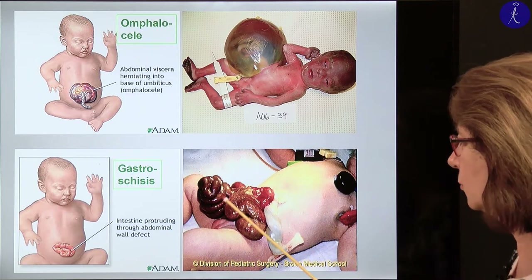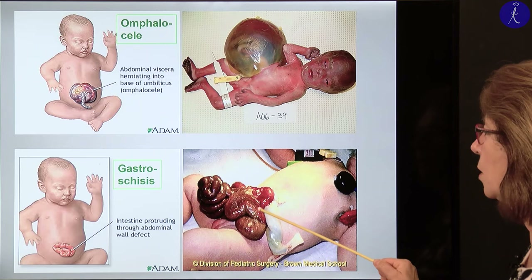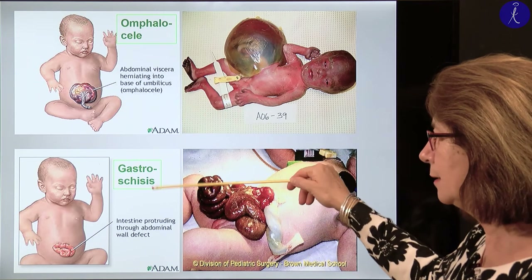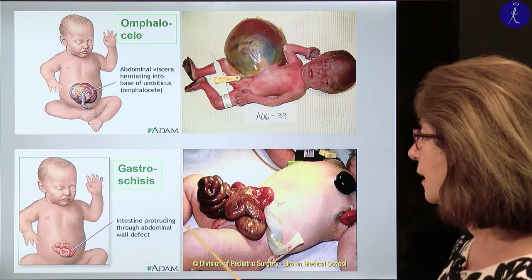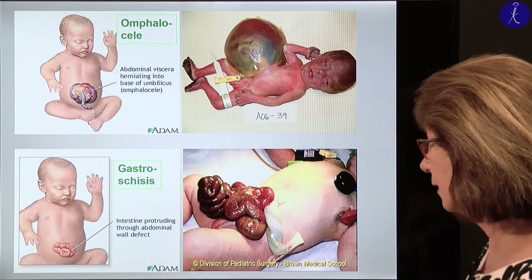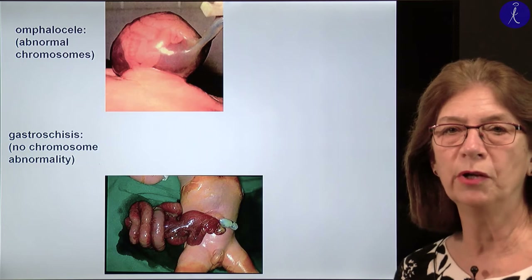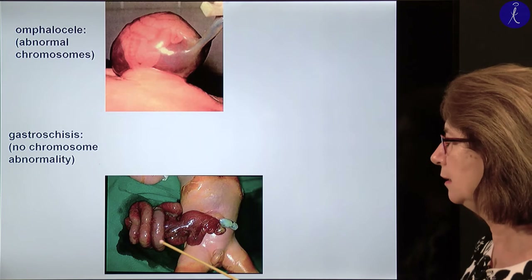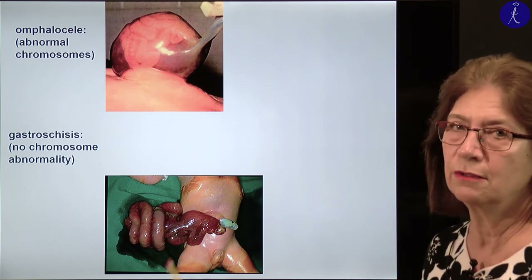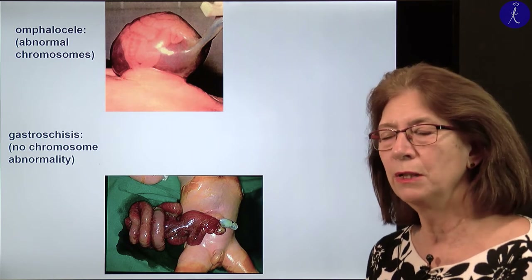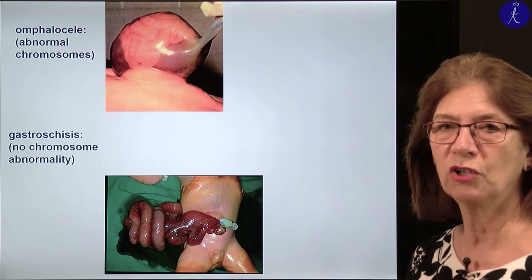In both cases this is a serious problem, because the amnion doesn't prevent evaporation and these tissues may dry out — even more so when the bowels, covered only by the serous membrane (the peritoneum), hang into the amniotic fluid. As long as they are in the amniotic fluid they are fine because there is fluid around them. But the minute these babies are born, it must be prevented from drying out and from infections.